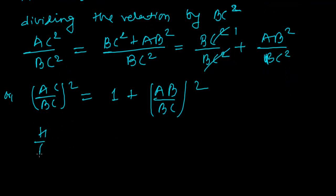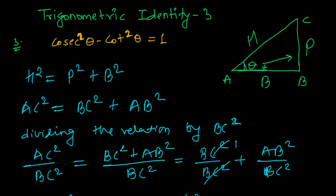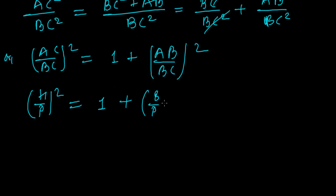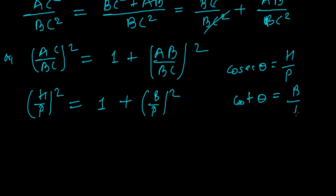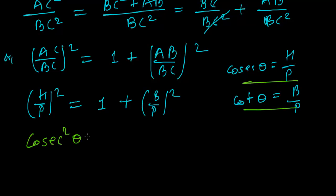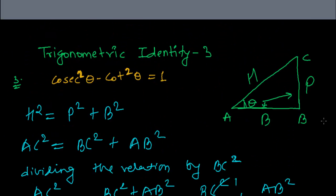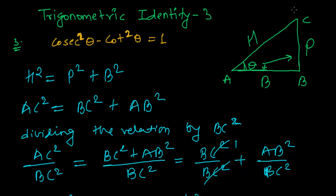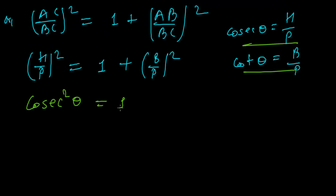So what is the value of AC upon BC? That is h upon p — h upon p whole squared equals one plus AB upon BC, that is b upon p, whole squared. We know that cosec theta is always the ratio of hypotenuse over perpendicular, and cot theta is always the ratio of base to the perpendicular. So h upon p is cosec squared theta, and b upon p is cot squared theta. In this triangle, AC upon BC gives cosec squared theta.